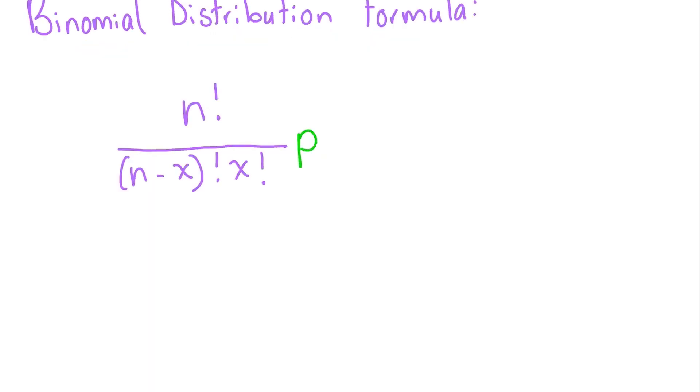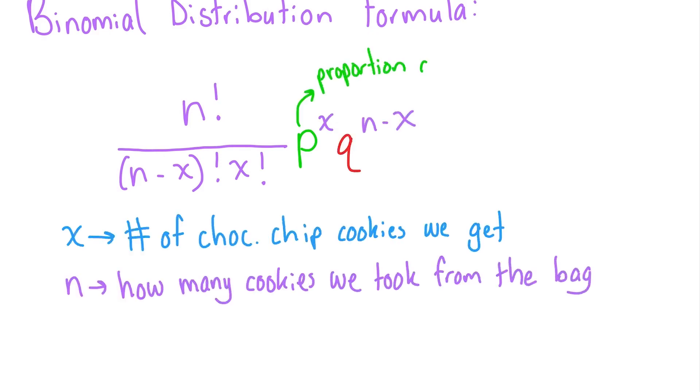This is the formula for binomial distribution. It may look complicated, but don't worry. It just tells us the chances of getting x chocolate chip cookies if we drew n cookies, where p and q are the same as before.